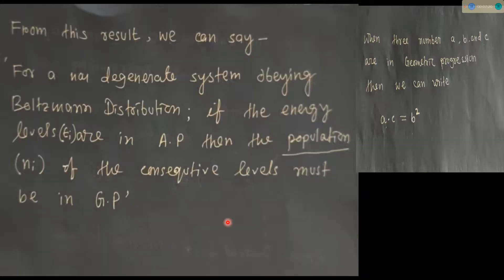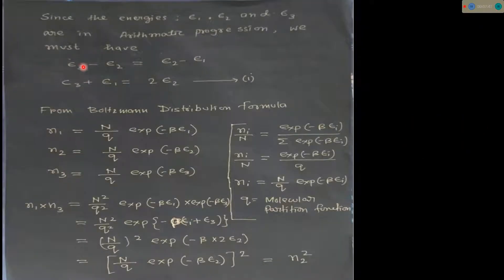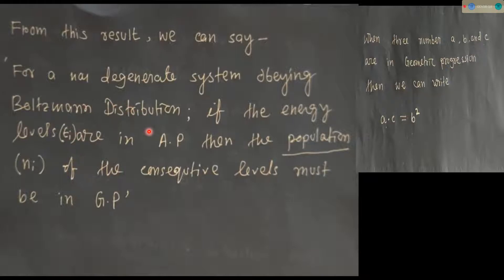From this result, n1 into n3 equals n2 squared, which is the primary condition for geometric progression. So we can conclude: if the energy levels of a non-degenerate system obeying Boltzmann distribution are in arithmetic progressions, then the populations of the consecutive levels must be in geometric progression. This has been justified through calculation using the Boltzmann distribution formula.